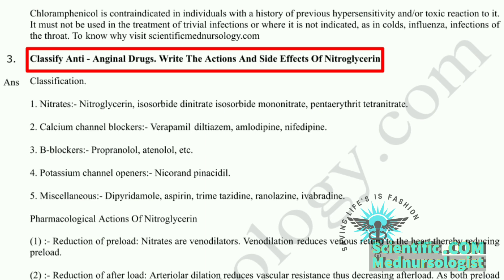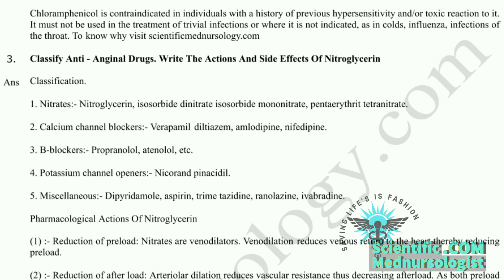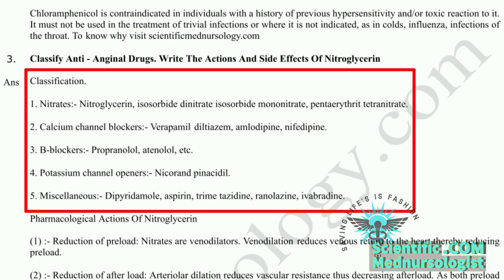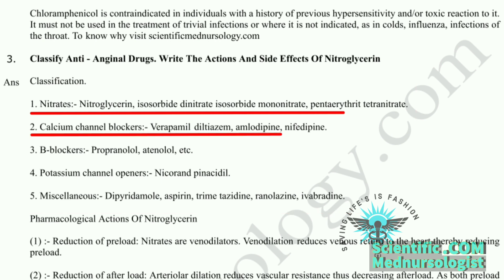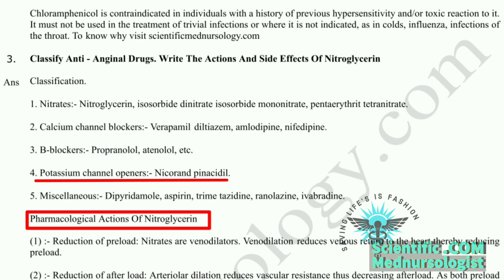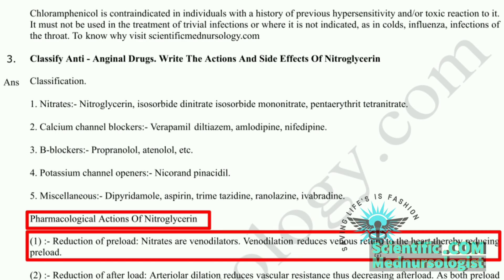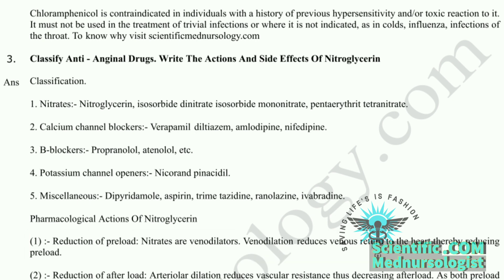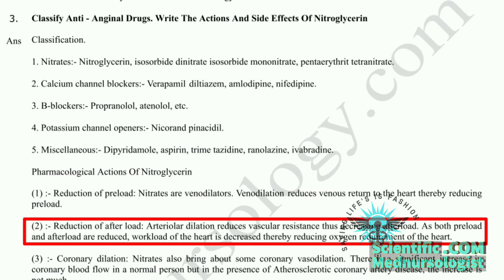Now the third question: classify anti-anginal drugs and explain the action and side effects of nitroglycerin. Classification of anti-anginal drugs includes: first, nitrates — example nitroglycerin; second, calcium channel blockers — example nifedipine; third, beta blockers — example atenolol; fourth, potassium channel openers — example nicorandil. Pharmacological actions of nitroglycerin include: first, reduction of preload — nitrates are venodilators, and venodilation reduces venous return to the heart thereby reducing preload. Second, reduction of afterload — arteriolar dilation reduces vascular resistance, decreasing afterload. As both preload and afterload are reduced, workload of the heart decreases, thereby reducing oxygen requirement.